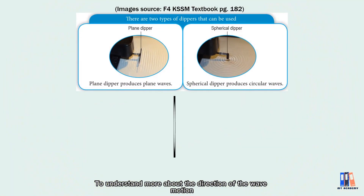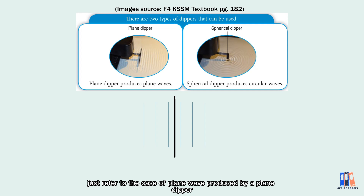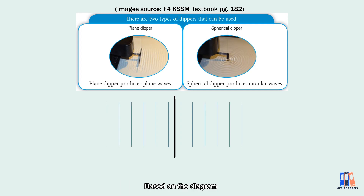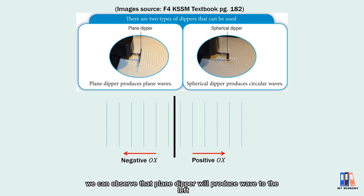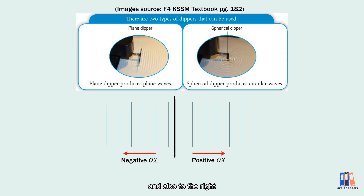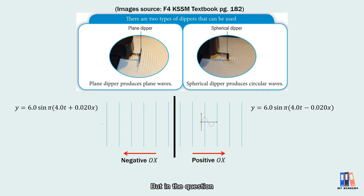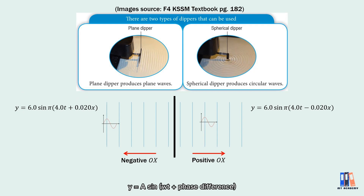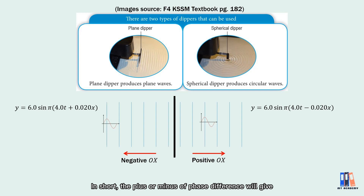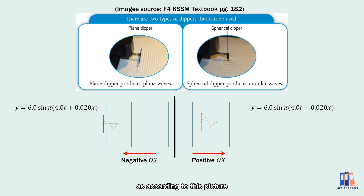To understand wave direction, consider a plane wave produced by a plane dipper. The plane dipper produces waves to both the left and right. For the right side, the equation takes the form y = a sin(ωt − φ), as derived earlier. For the left side, the equation is in the form y = a sin(ωt + φ). So the positive or negative sign of the phase difference tells us the direction of wave propagation.